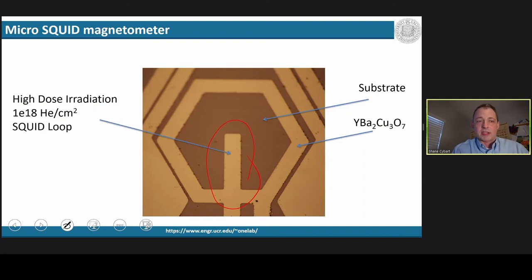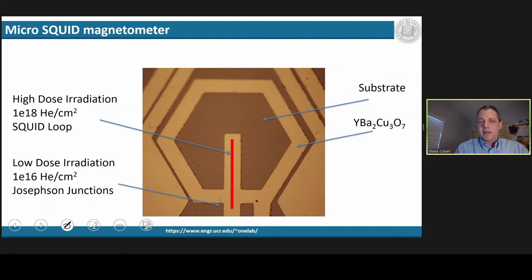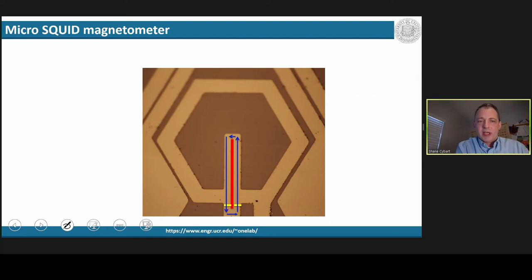First, we start by using helium irradiation to create the slit, which is going to pass the flux, and that's going to be where the squid lives. No material is removed or etched, we're just converting it to an insulator. Then we use a lower dose of irradiation to create two Josephson junctions near the bottom. If there's a flux inside of the squid, it creates a circulating current around the device, shown in blue, and that is the actual squid.